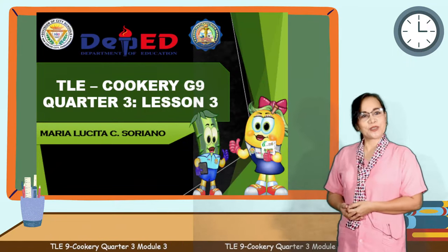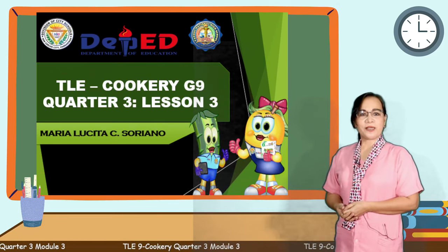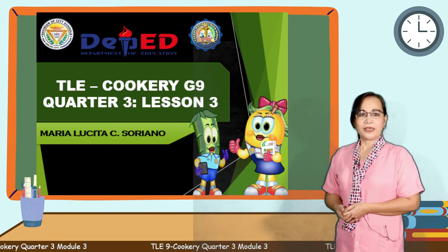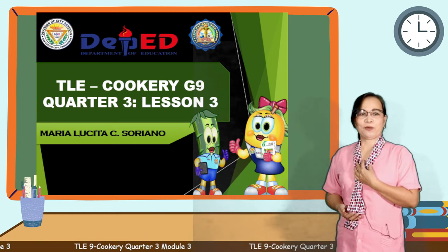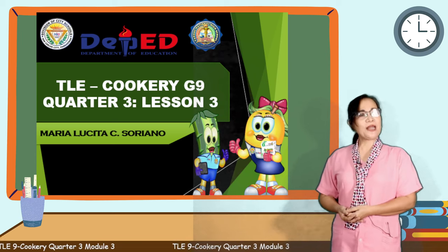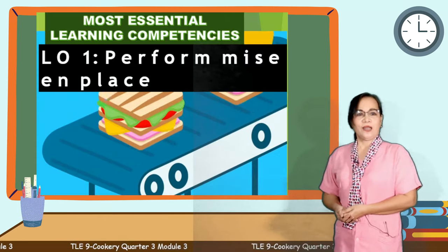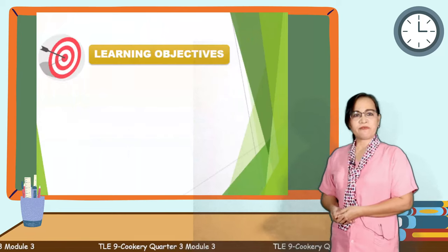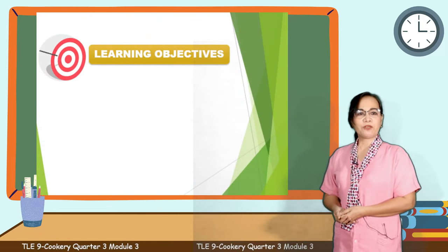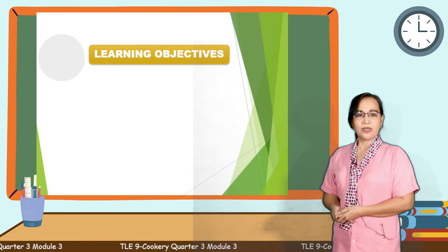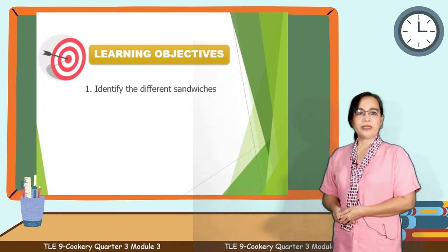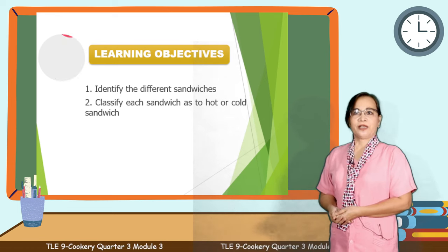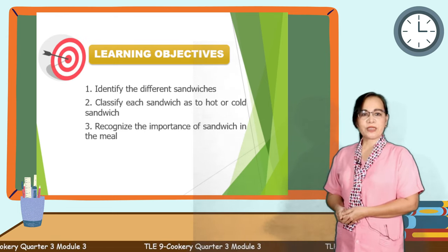I can sense your excitement, so please pay attention as we begin our lesson. You'll face challenges and have a lot of fun, but don't worry, I'll be here to assist and guide you. Our lesson for today is based on learning competencies. Learning Objective 1: Perform May Zen Class. After going through this module, learners are expected to: Number 1, identify the different sandwiches. Number 2, classify each sandwich as hot or cold. Number 3, recognize the importance of sandwich in the meal.